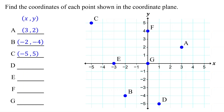What are the coordinates of point D? Give it a try. First, move vertically to the x-axis to find its x-coordinate, which is 1. Then, move horizontally to the y-axis to find its y-coordinate, which is negative 5. So, the coordinates of point D are (1, -5).